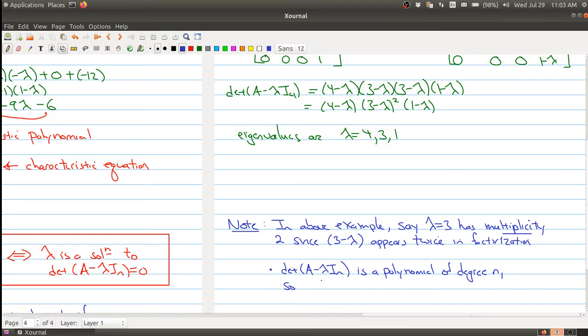The other thing that you can notice is that because we're dealing with an n by n matrix, the characteristic polynomial is always going to be a polynomial of degree n. So if you know a little bit about the fundamental theorem of algebra, it says that any polynomial of degree n has at most n roots. So we know that we have at most n possible eigenvalues since at most n roots to the characteristic equation.